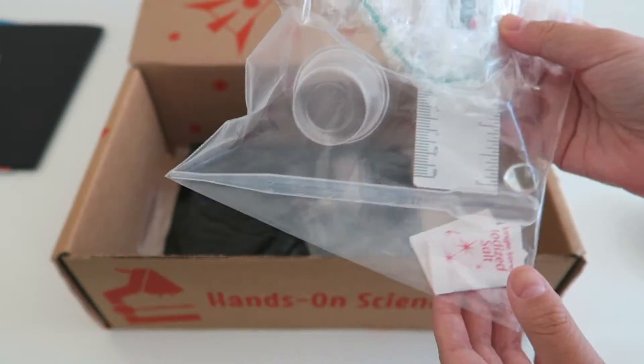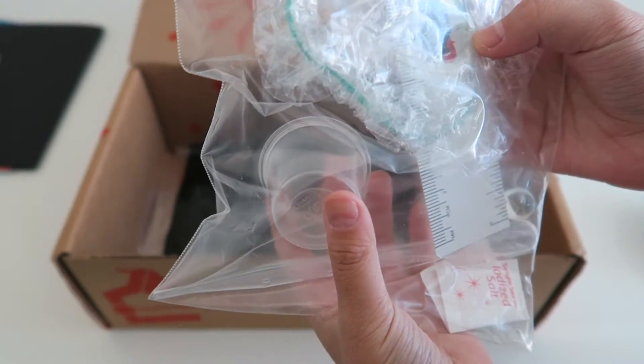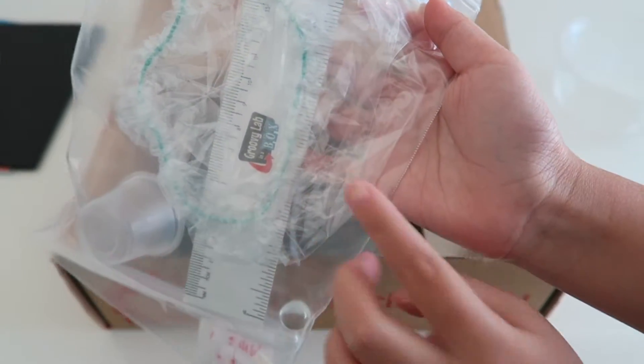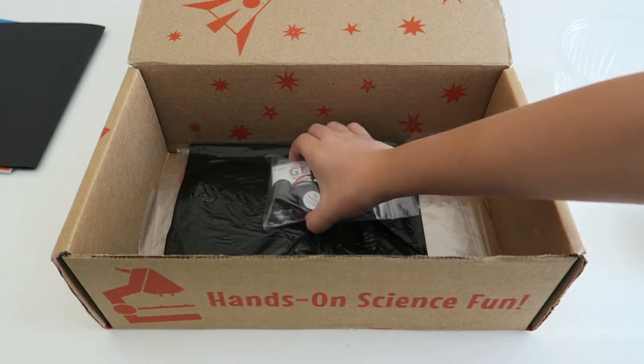The next thing we have is salt, a pipette, a small cup, a ruler, a shower cap, and a marble. The next thing we have is a bowl.